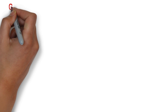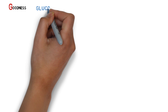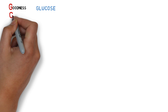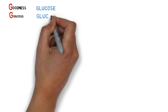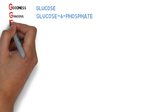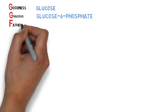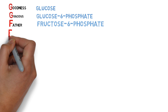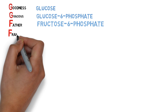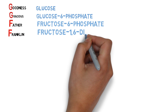G of goodness is for glucose, the substrate for glycolysis. G of gracious is for glucose 6-phosphate. F of father is for fructose 6-phosphate. F of Franklin is for fructose 1,6-diphosphate.